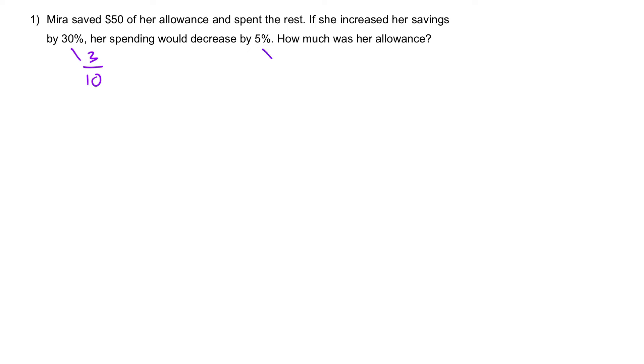Let's focus on the second sentence. Ignoring the percentage for the moment, if she increased her savings, the only way she can increase her savings is if the additional amount of money must come from the spending.